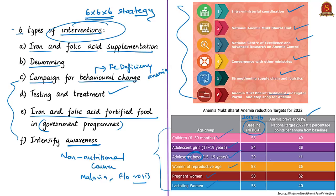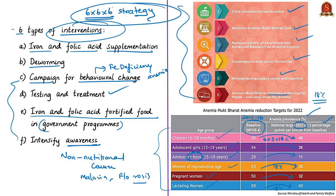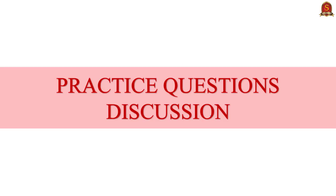Anemia prevalence data for all six vulnerable sections from NFHS 4 (2015-16) serves as the baseline. Each year from this baseline to 2022 requires a 3 percentage point reduction, meaning an 18 percentage point reduction (6 years × 3%) for all sections by 2022. This is why the strategy is called 6×6×6 — six target beneficiary groups, six interventions, and six institutional mechanisms — aiming to reduce anemia by 2022.